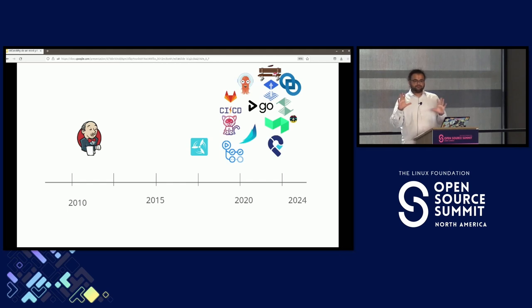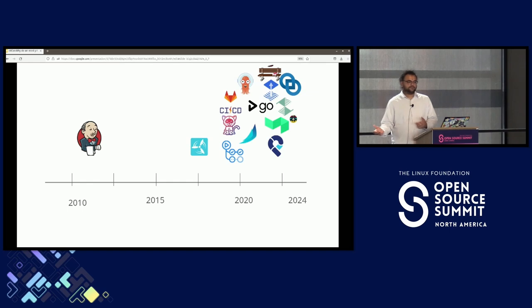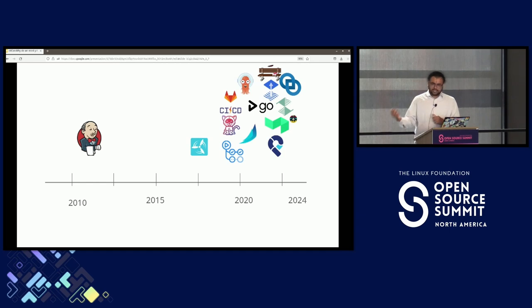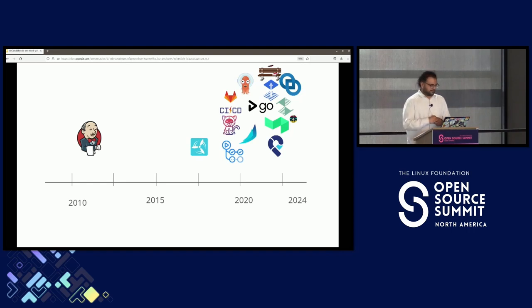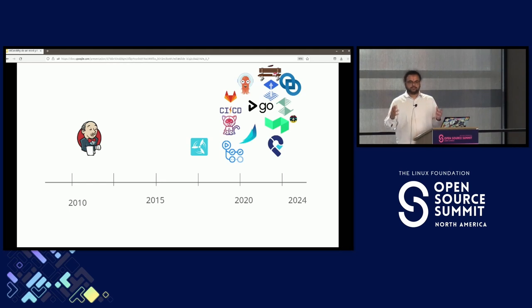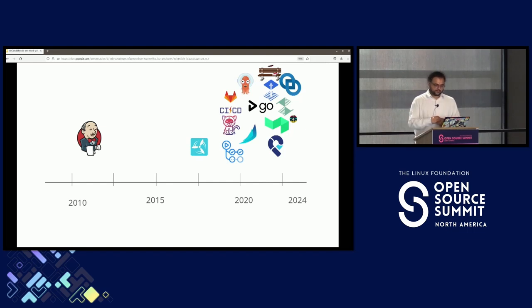Before any of the pedantic folks in the audience pound on me — this is not a timeline of when the tools were made, this is a timeline of when I started to learn about these specific tools, especially in the CD ecosystem. When I was talking to a lot of people, they seemed to share a similar timeline. If you really look at the sort of Cambrian explosion in the number of continuous delivery tools, and add the open source projects and vendor-driven ones and proprietary things — it is huge and really hard to keep track of.